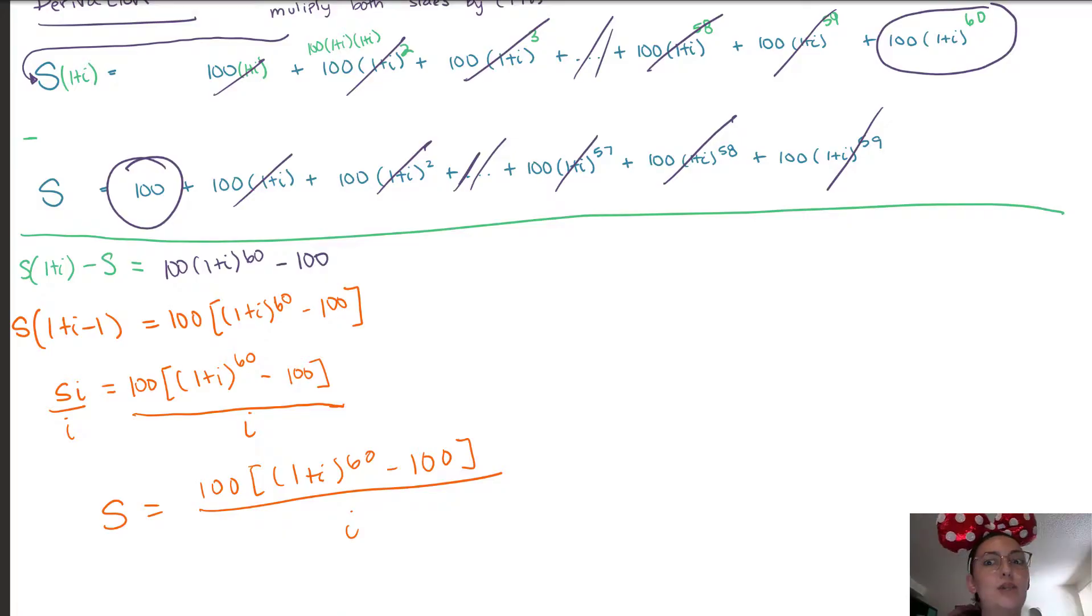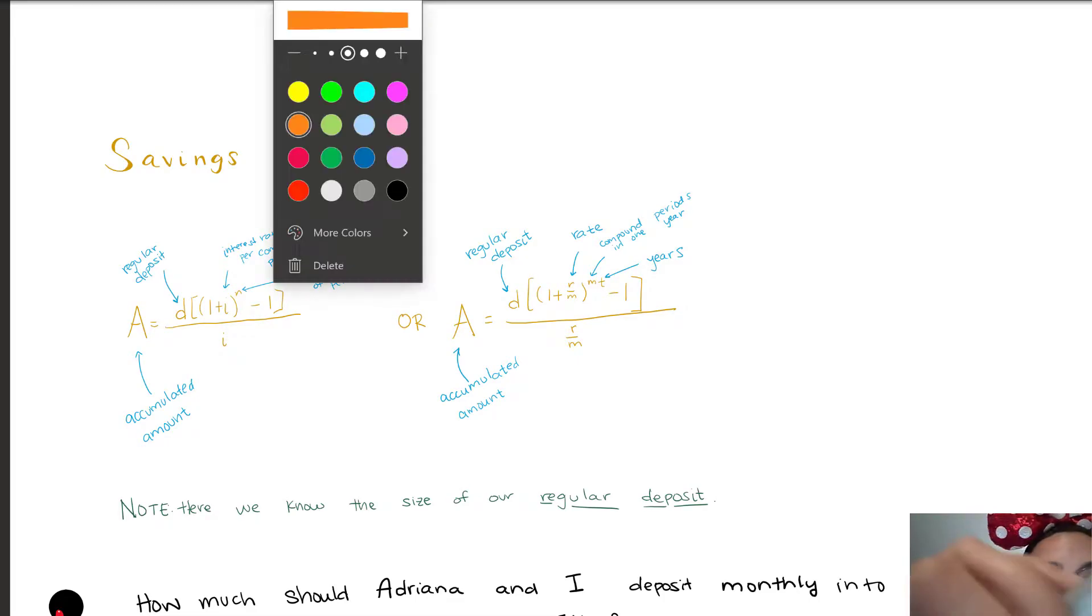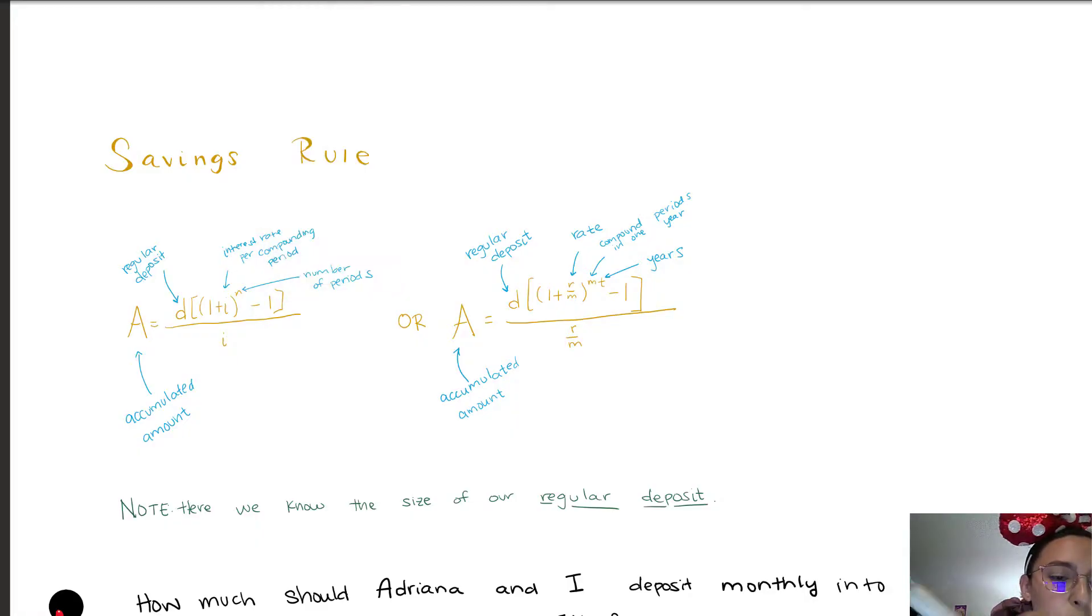So the generalized saving rule is the following. Just like before, we're going to keep some of the same terminology, so we have the accumulated amount in both the expanded version and the simplified version.